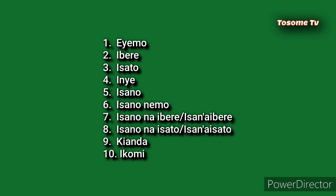Six, ISANO NEMO. ISANO NEMO. Seven, ISANO NAIVERE. It is commonly said ISANO NAIVERE. Eight, ISANO NAISATO. ISANO NAISATO. Or you may sometimes say ISANO NAISATO. Then nine, KIAANDA. KIAANDA. Ten, IKOMI. IKOMI.